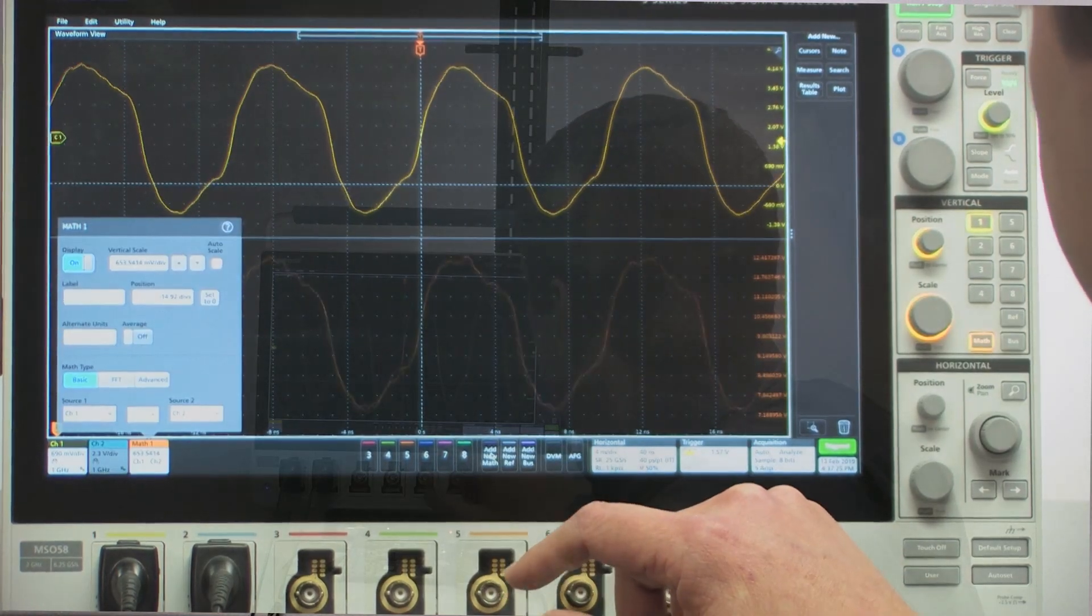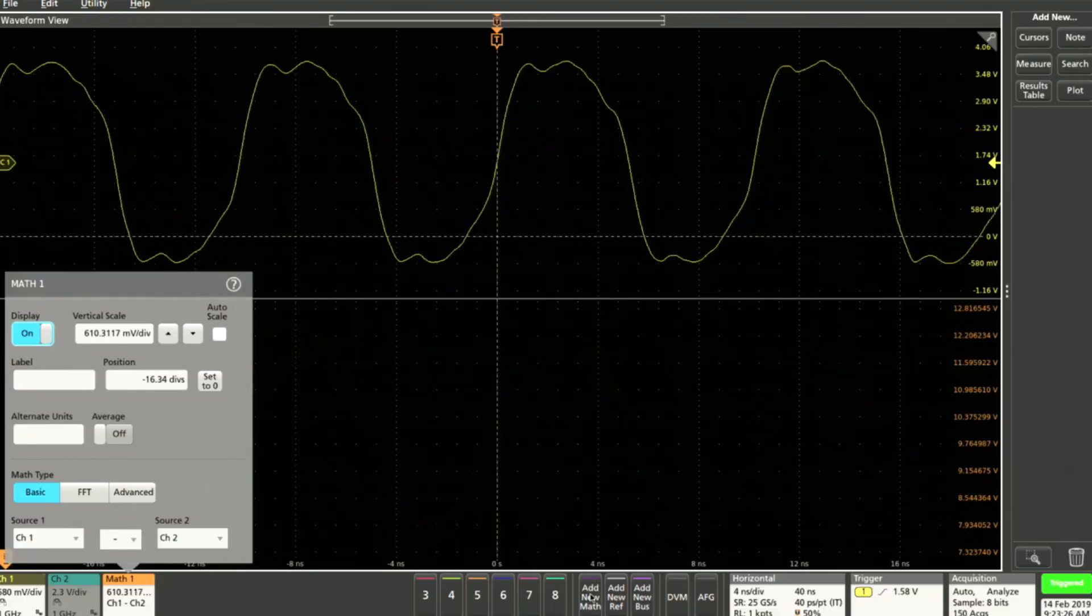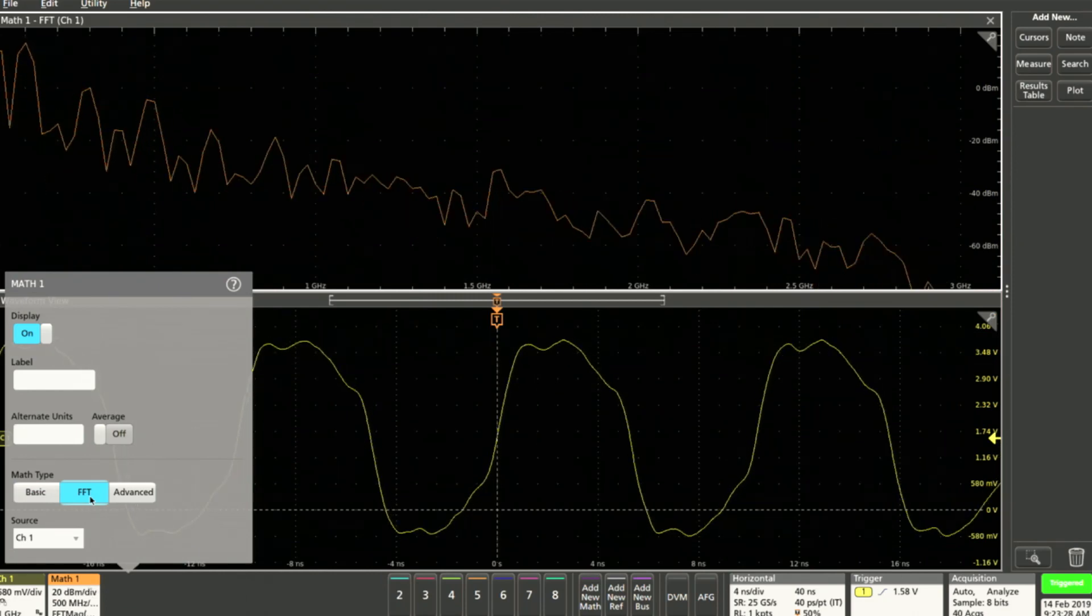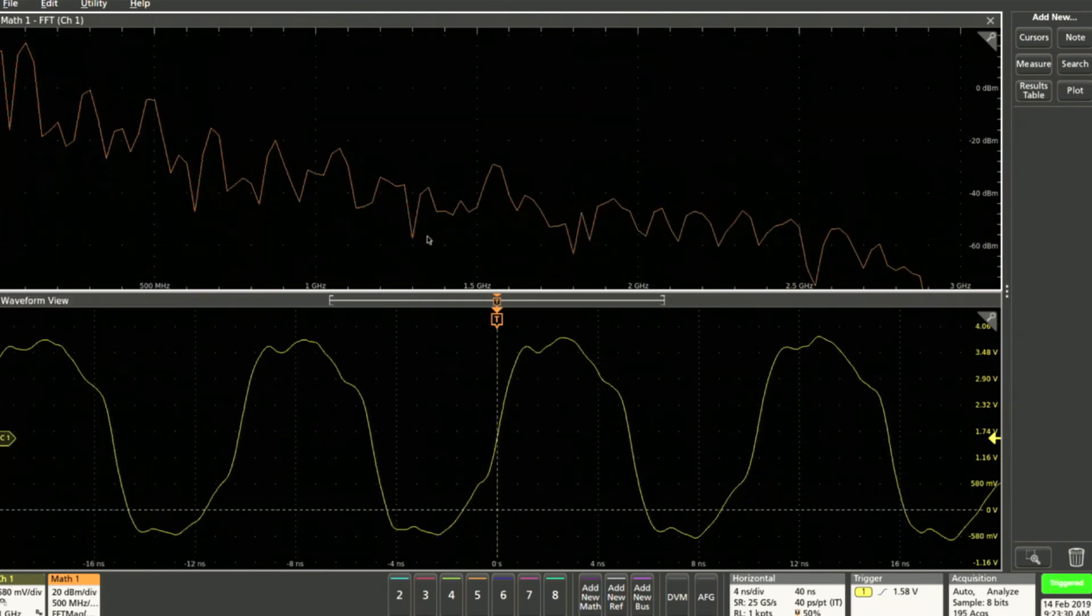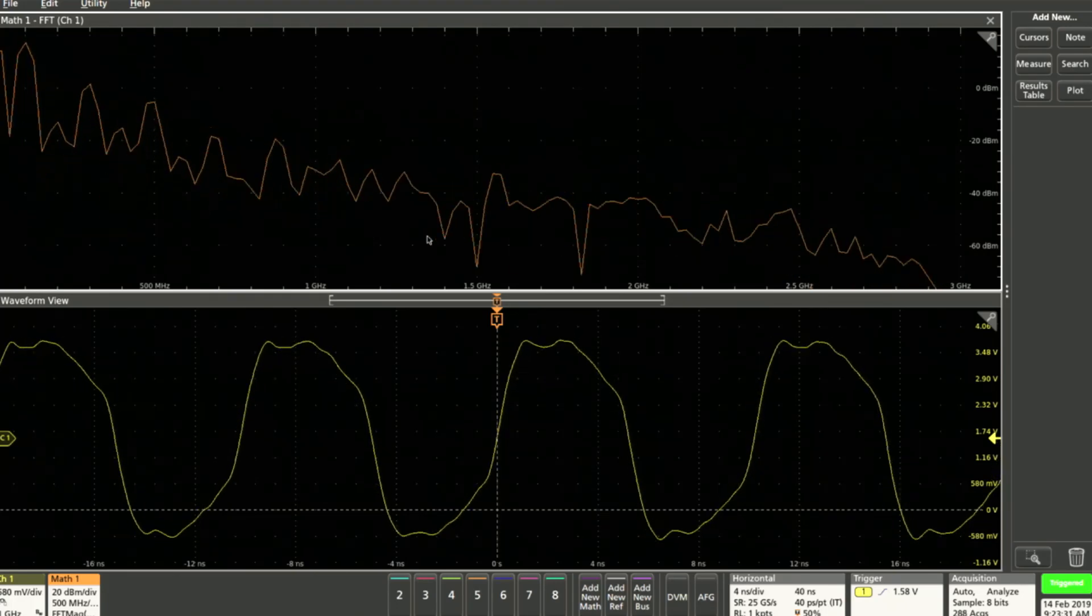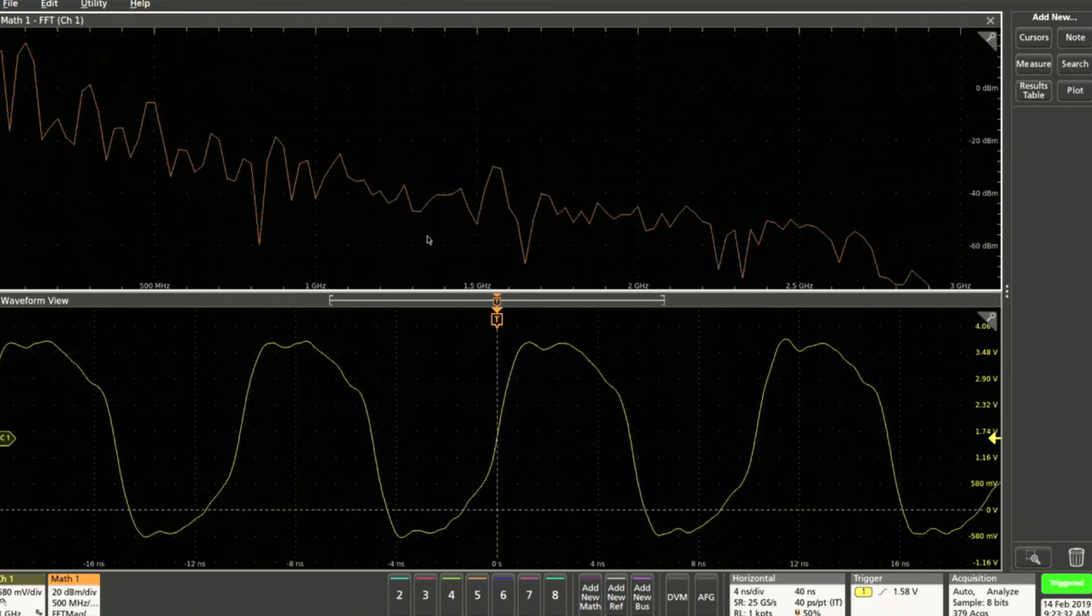The first thing I'm going to do is set up a traditional FFT display. I'll do that by adding a math waveform, setting it to FFT, and you see up here a spectrum.